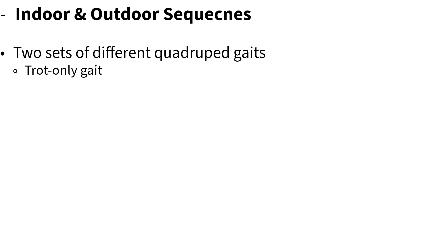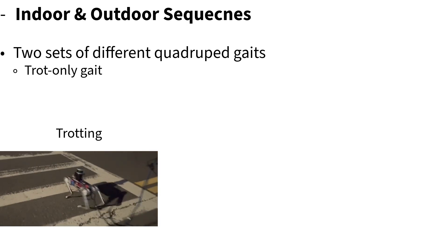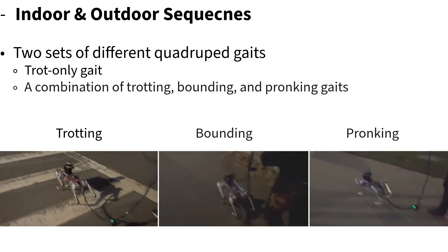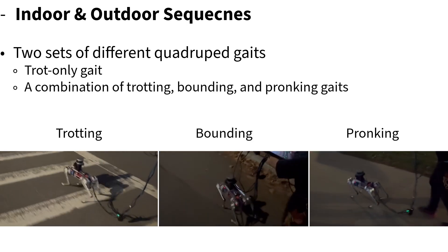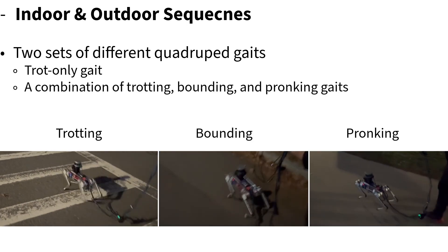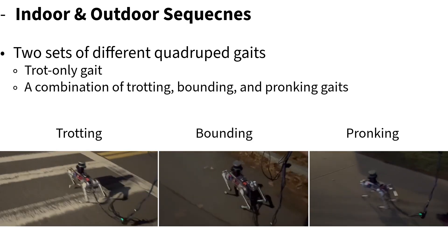For both indoor and outdoor sequences, we used two different sets of quadruped gaits. One is a trot-only gait, and another combines trotting, bounding, and pronking gaits.